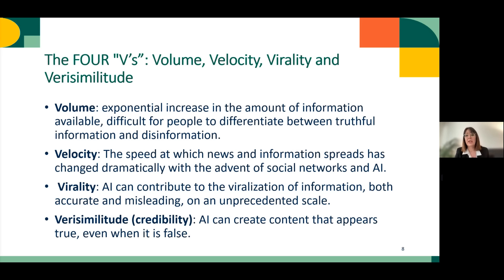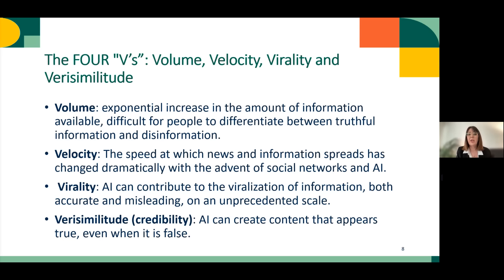Why is it so complicated? Because with artificial intelligence, things have changed in ways that can be very productive but also very challenging. These challenges are what we call the four V's for artificial intelligence: volume, velocity, virality, and verosimilitude. Volume refers to the exponential increase in the amount of information available, which makes it difficult for people to identify truthful information from disinformation.